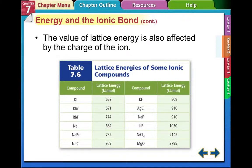The value of lattice energy is also affected by the charge of the ion. You can see, once again, these two, potassium and iodine, a plus one and a minus one, have a small lattice energy. Where magnesium, plus two, and oxygen, a minus two, have a very high lattice energy.